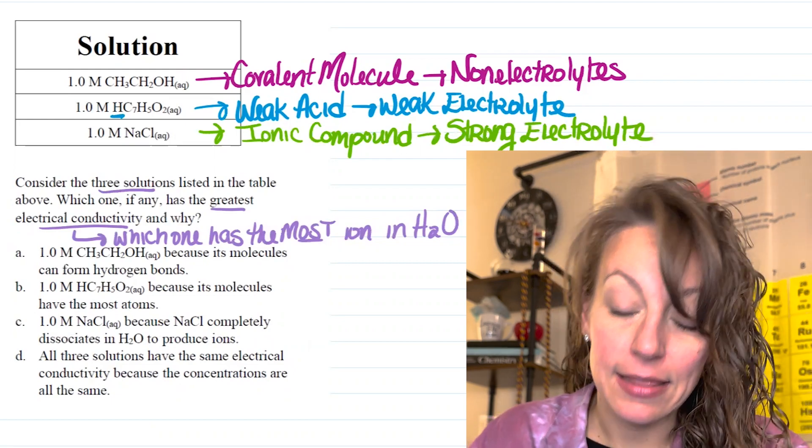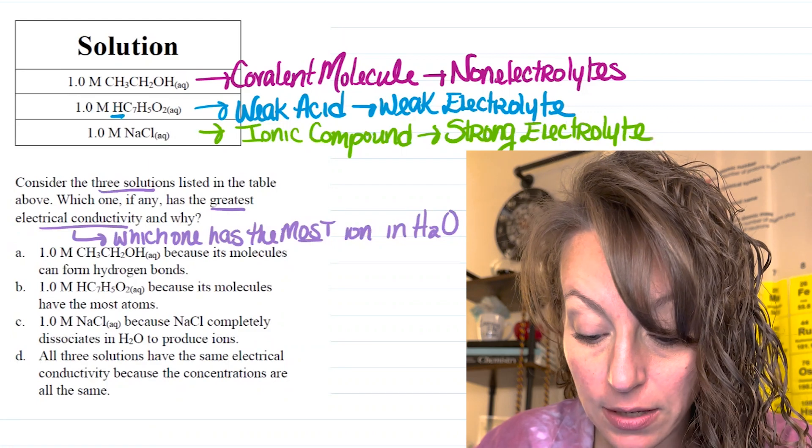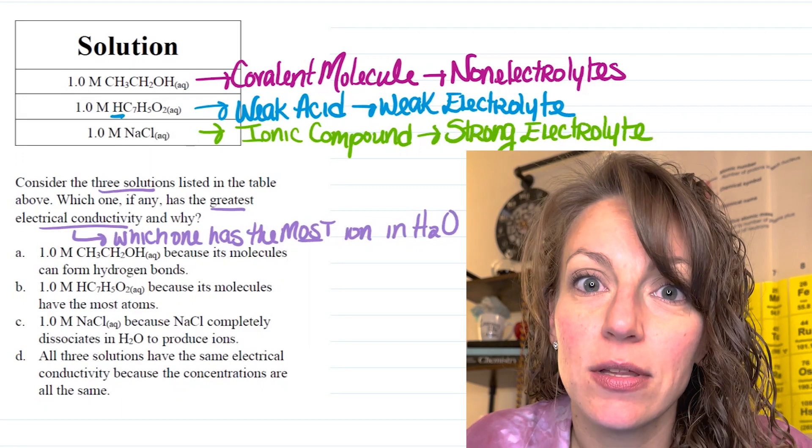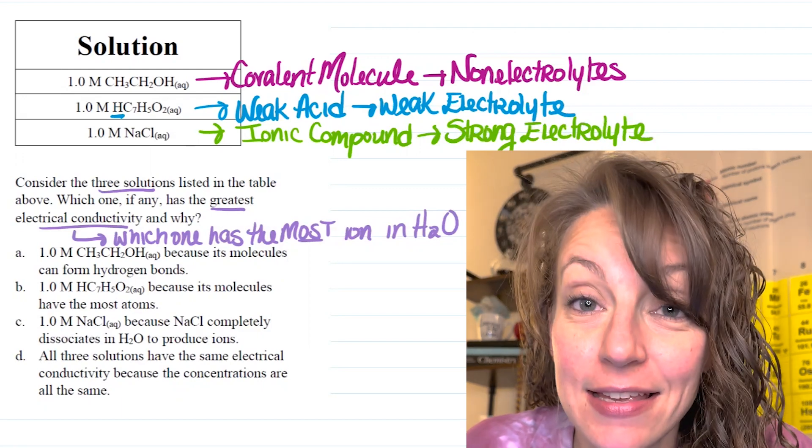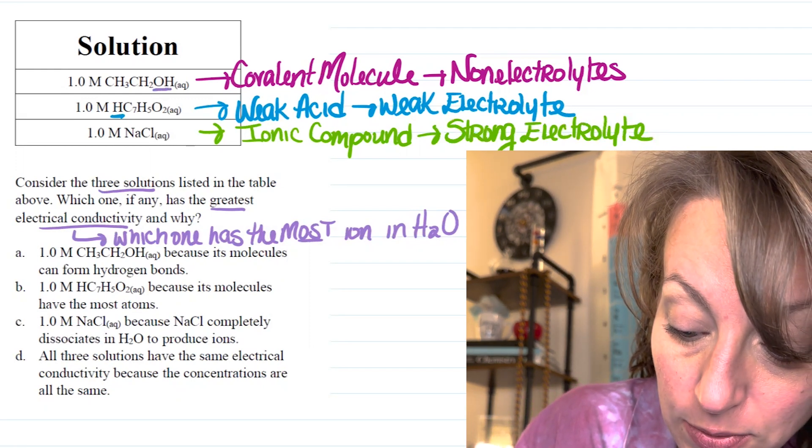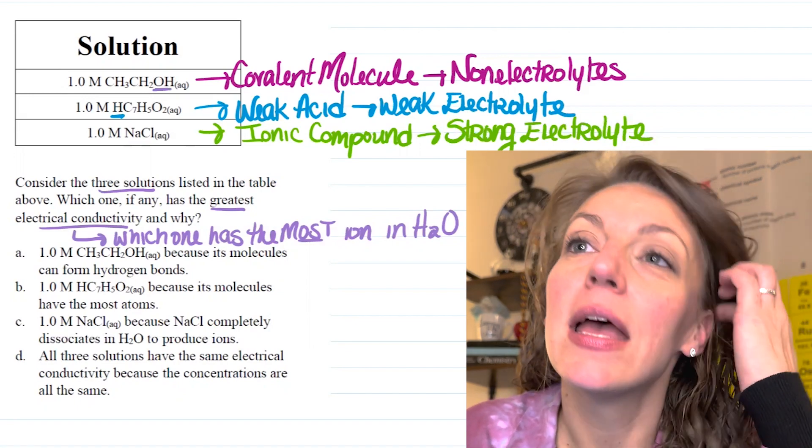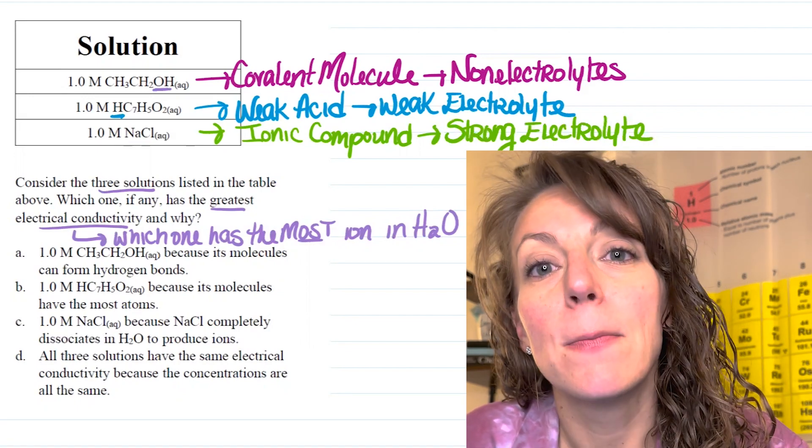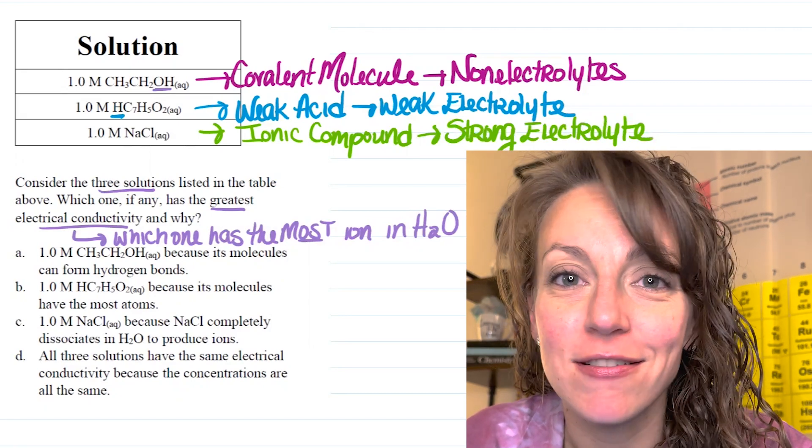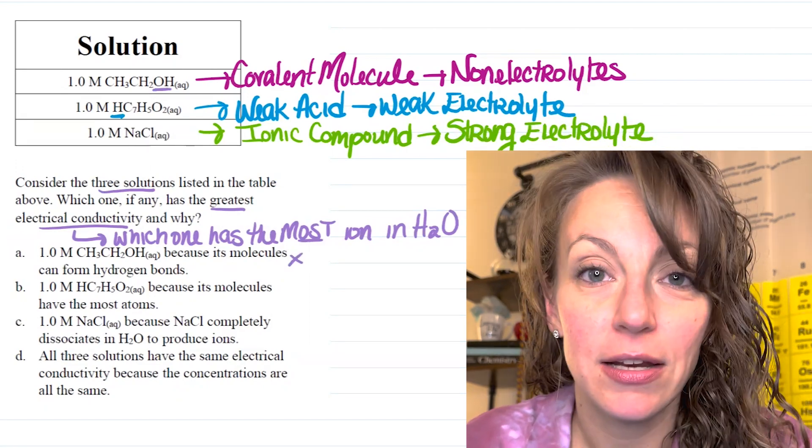In letter A, they tell you 1.0 molar CH3CH2OH because its molecules can form hydrogen bonds. Now, here's where the College Board likes to be a little bit tricky. That is technically a true statement. Because in this particular molecule, the first one, the H is bonded to the O, that allows it to form hydrogen bonds between two separate molecules. However, the hydrogen bonds are not going to allow it to conduct electricity. So, that's not a great option.